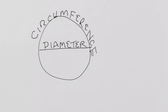So, if you forget what circumference is, circumference is the distance around a circle, kind of like a perimeter. Diameter is the distance across a circle.